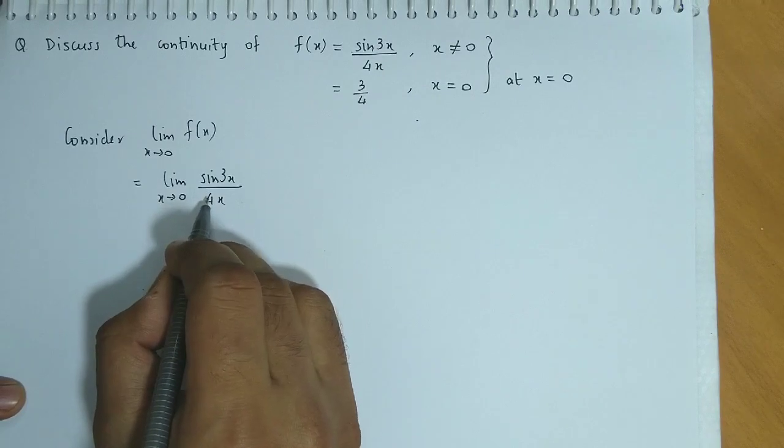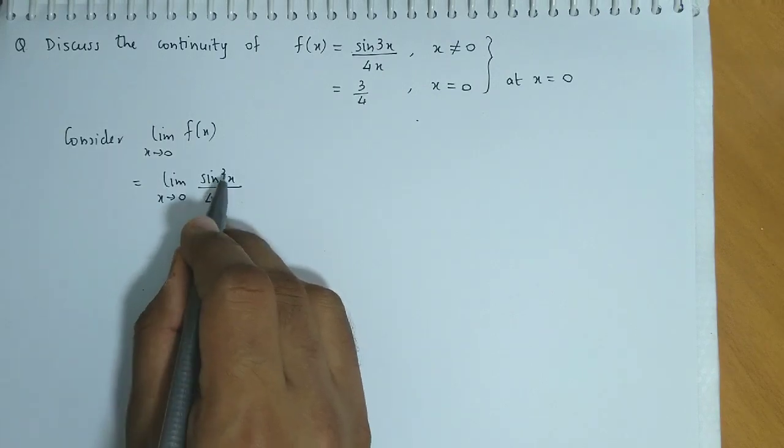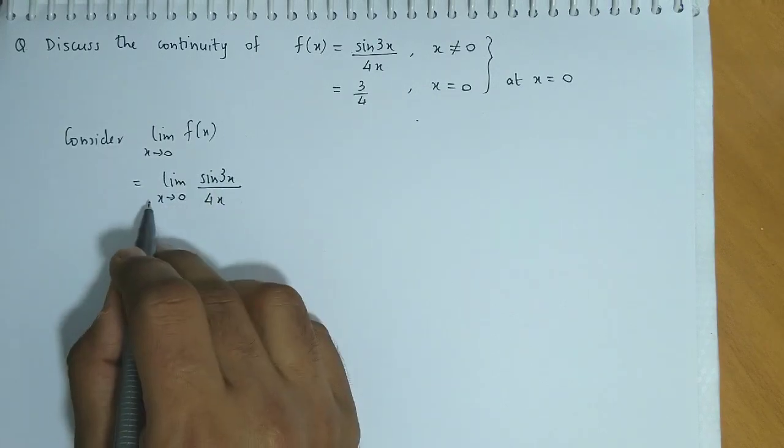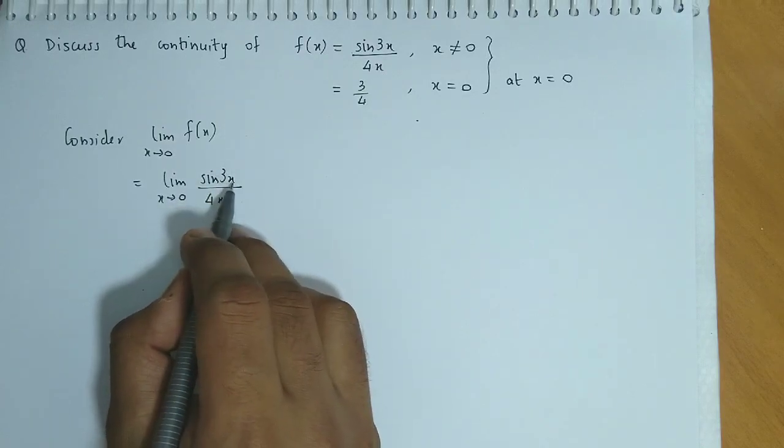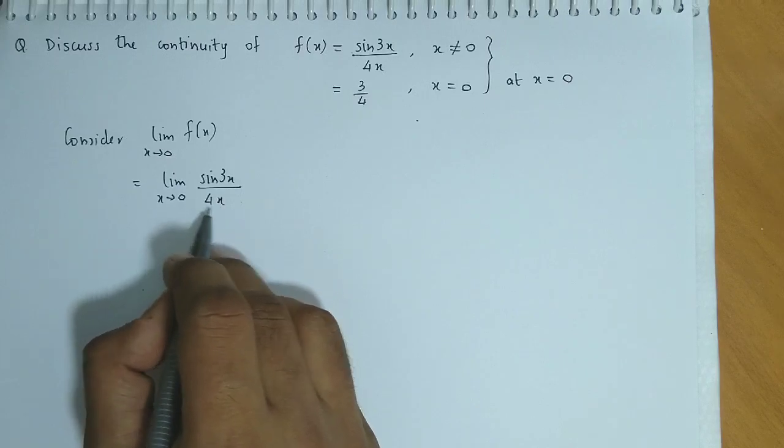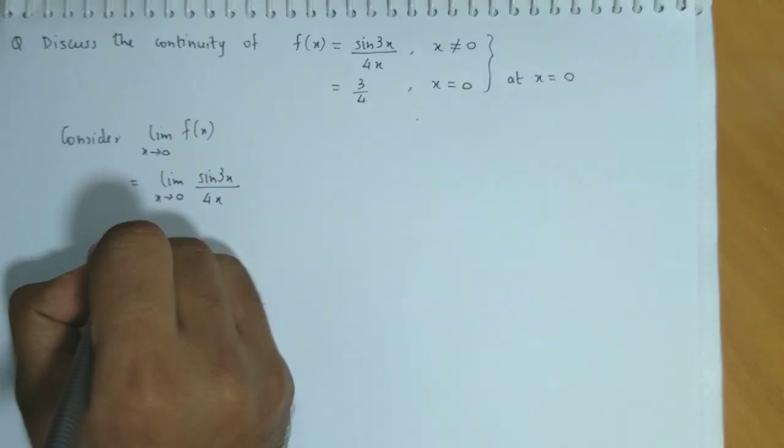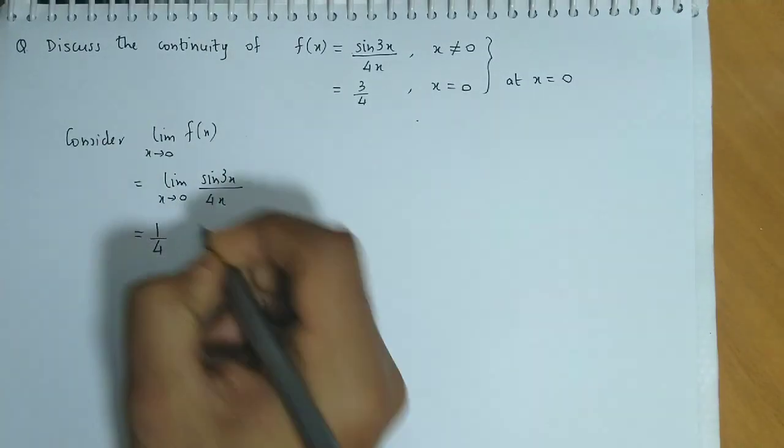Now we will try to convert this to sin theta upon theta as theta tends to 0 form. So here angle is 3x but here is 4x, so we have 1 by 4.